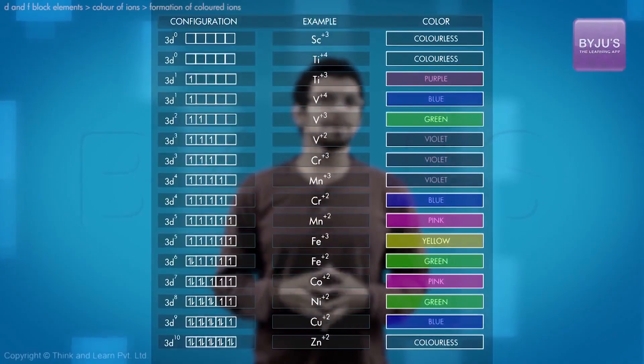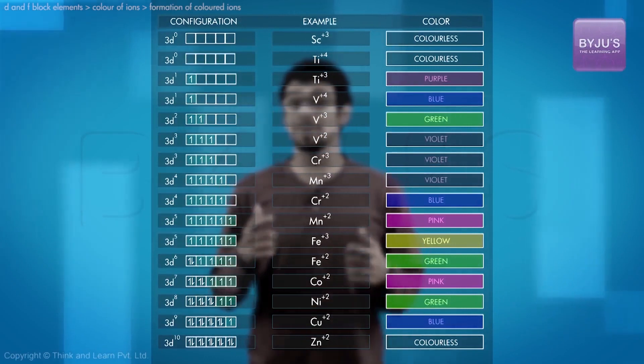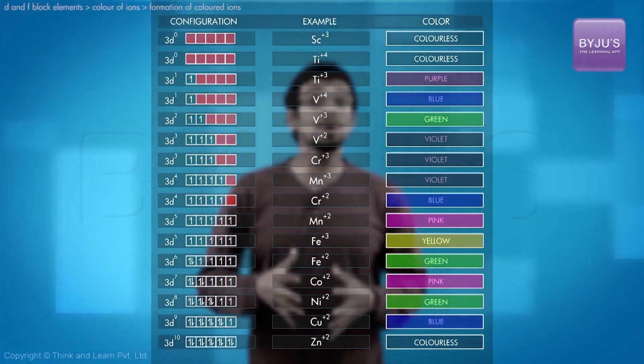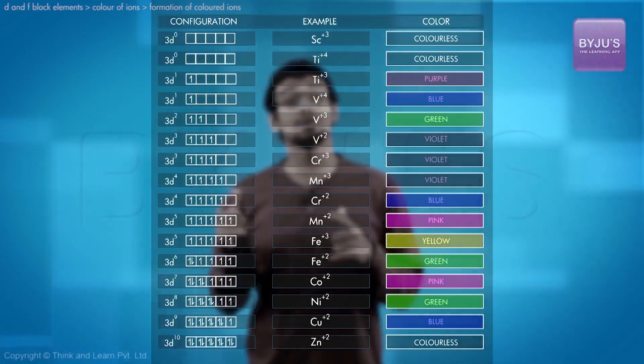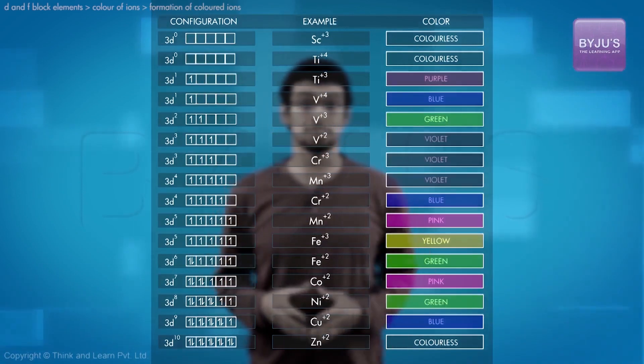It would be useful to make a correlation between the electronic configuration or the number of unpaired electrons inside of the ions and the number of empty d orbitals and the charge on the transition metal ion and of course the color that it exhibits in solution.